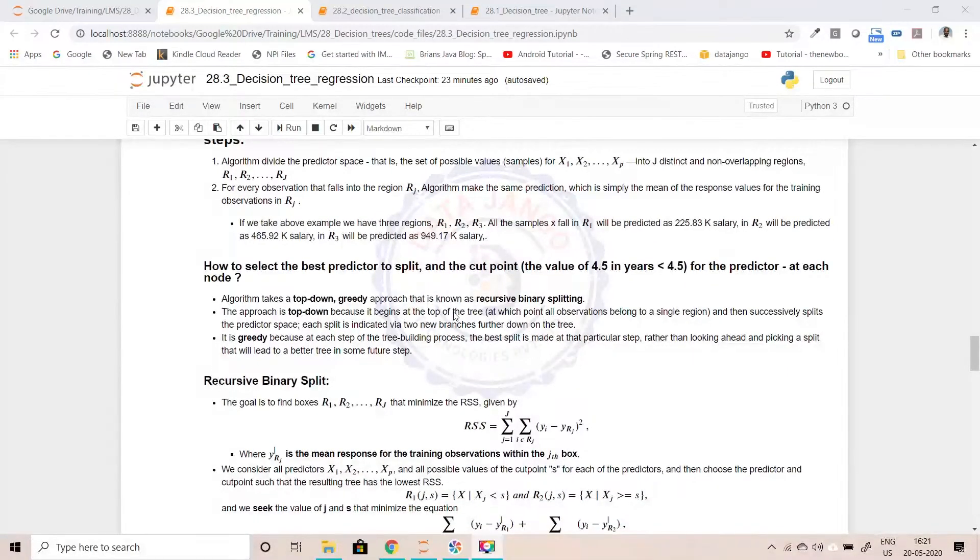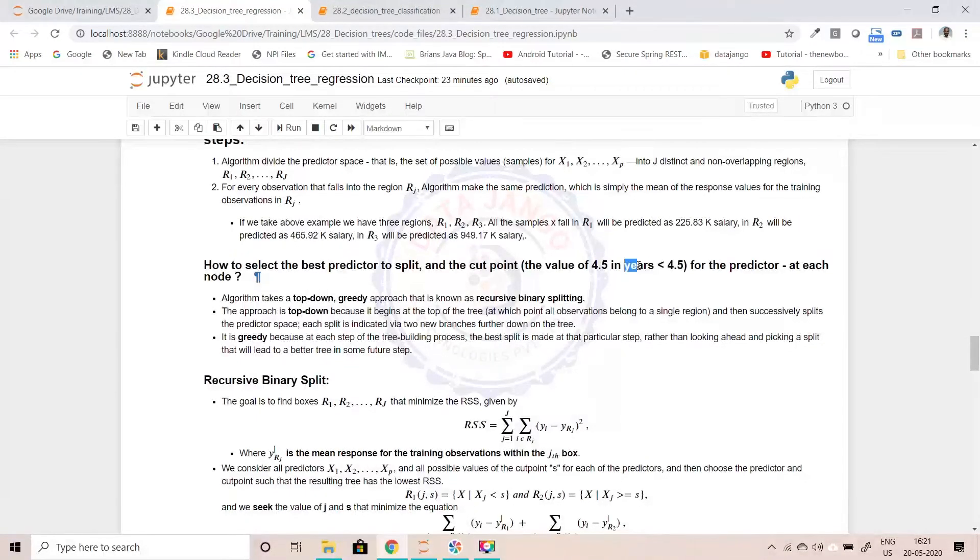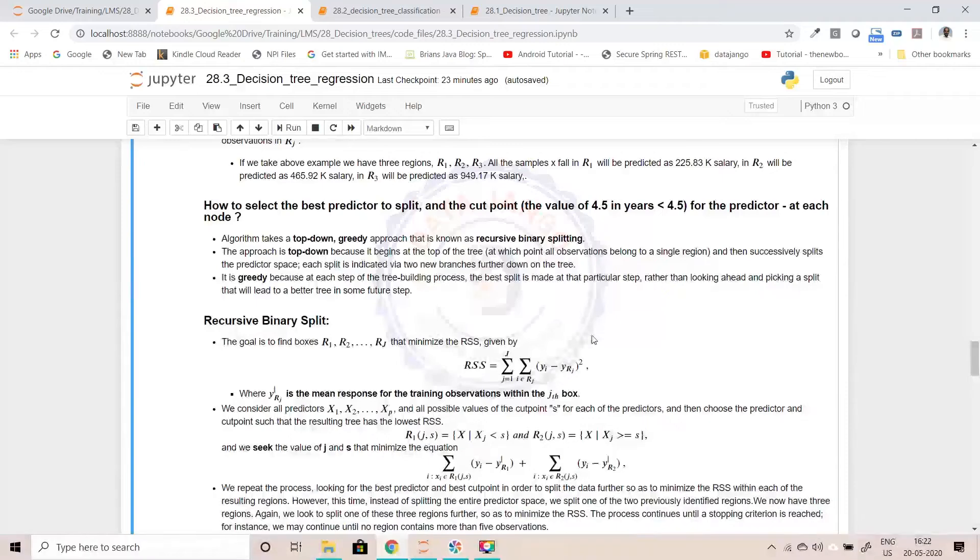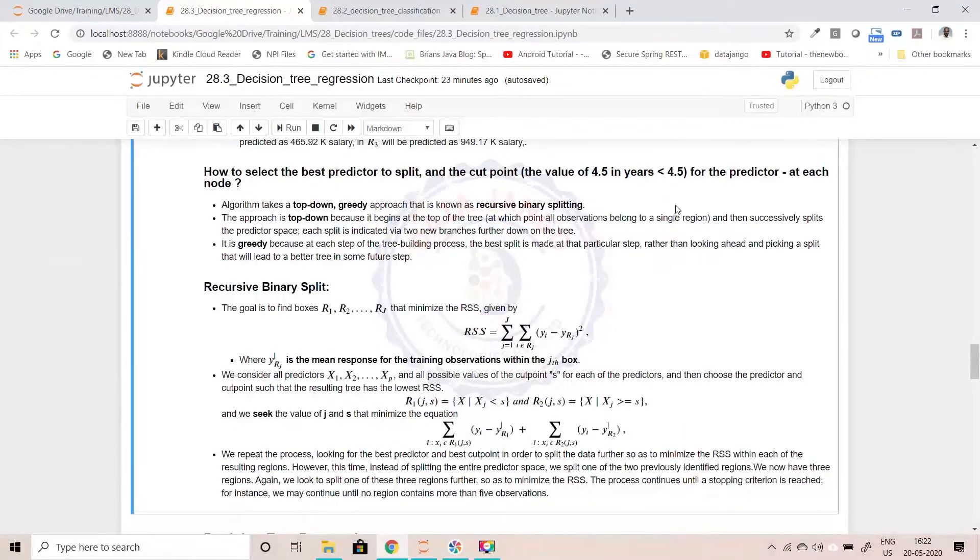So let us try to understand how exactly it knows that the years less than 4.5 is the best way to split the data. This was the problem even in classification. First, how did it know that years is the best feature to split on? And how did it know 4.5 is the best place to split the years and the total data set? There is a concept called cut point. This 4.5 is a cut point at which it is trying to split the data into two parts.